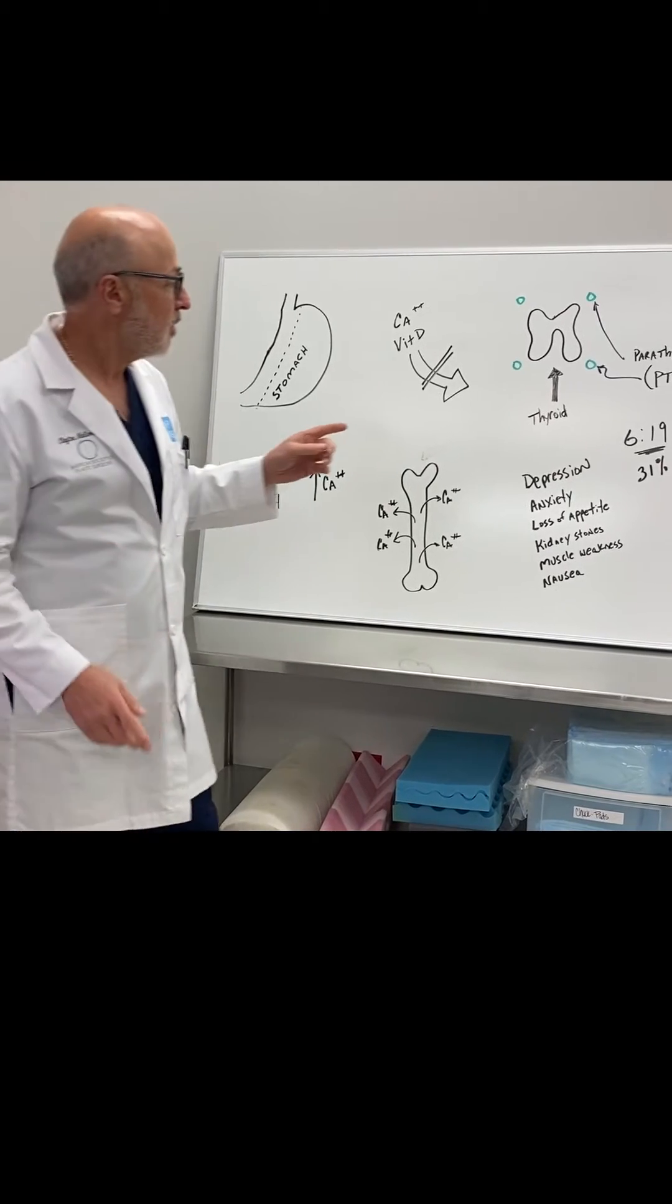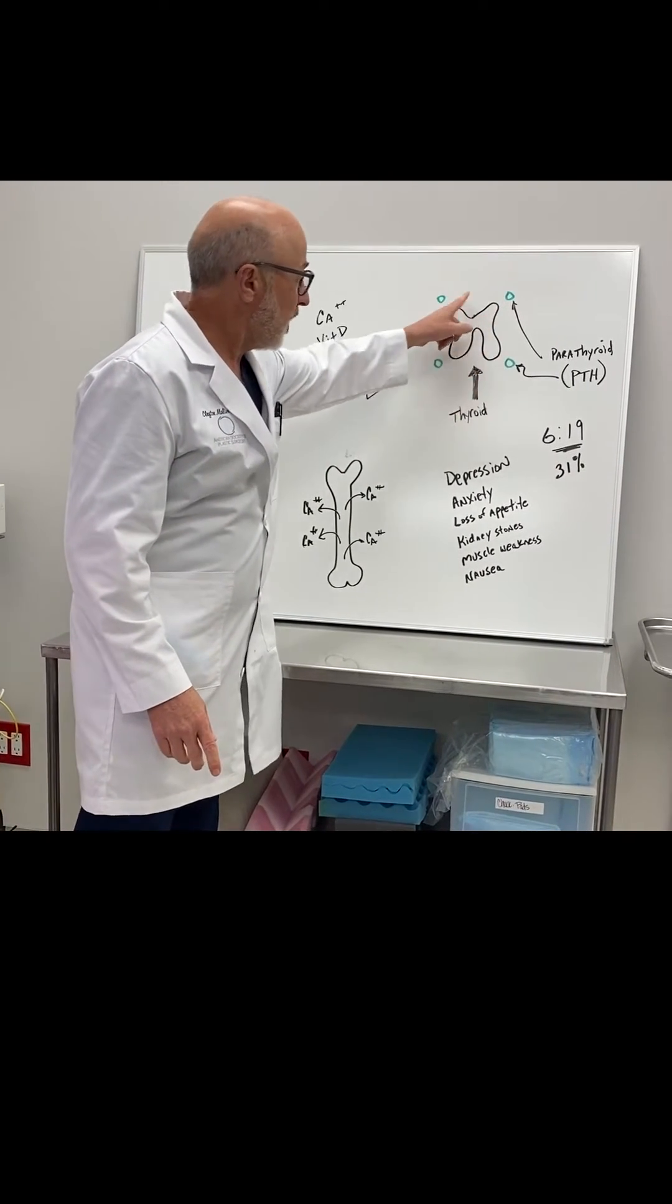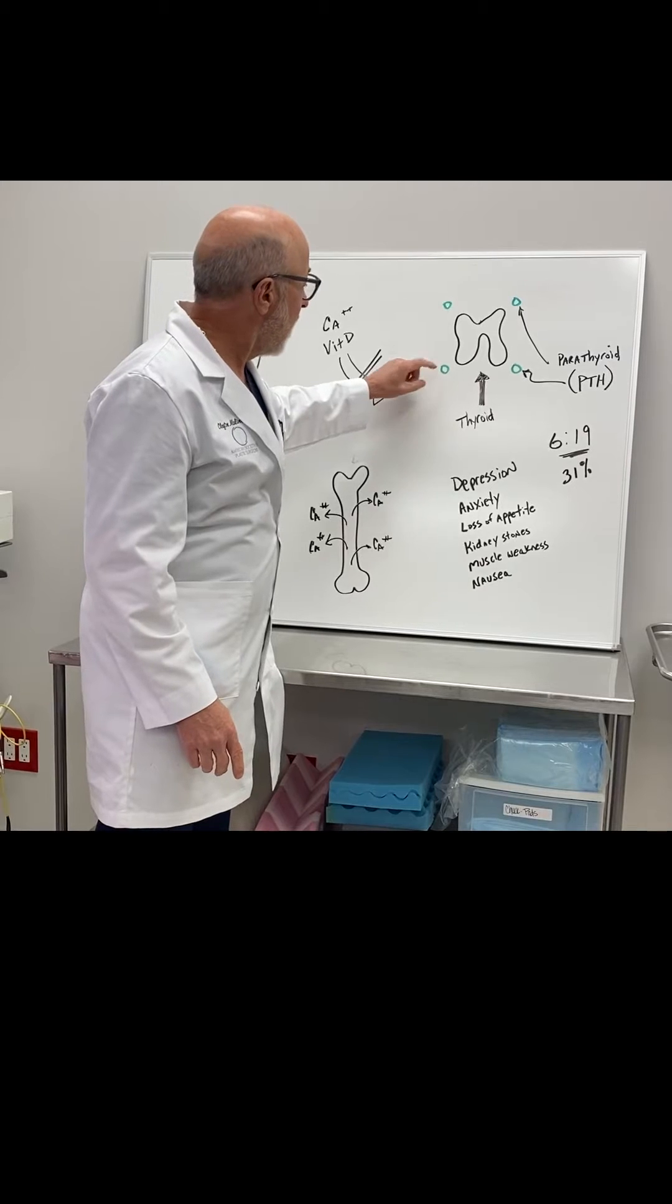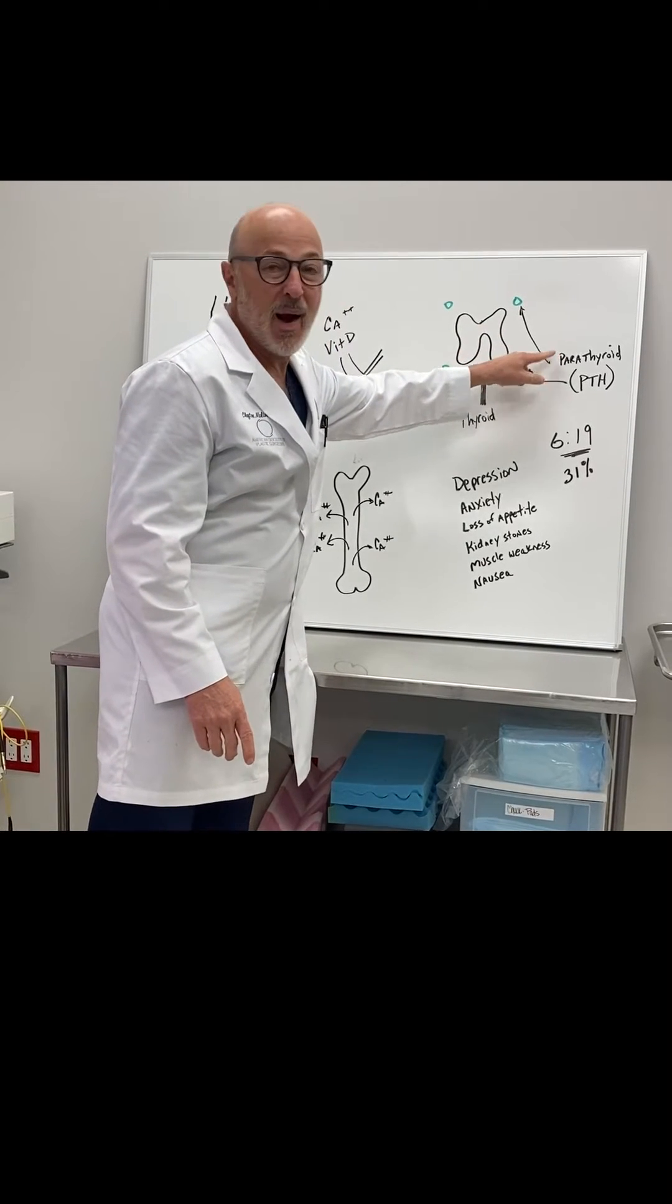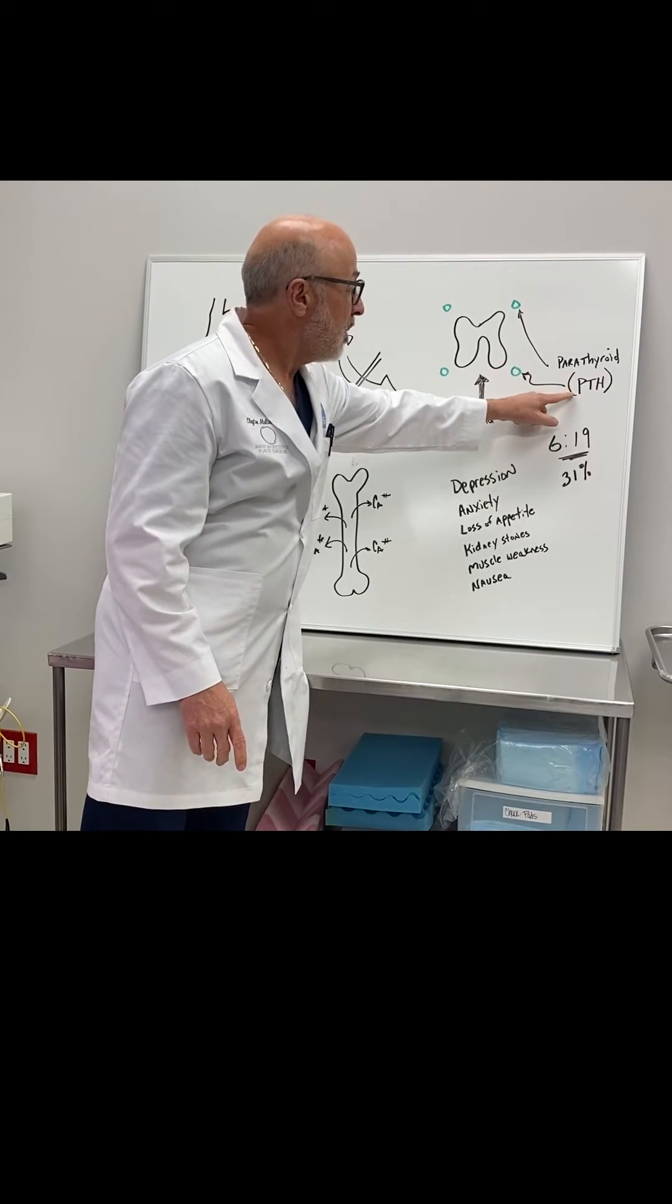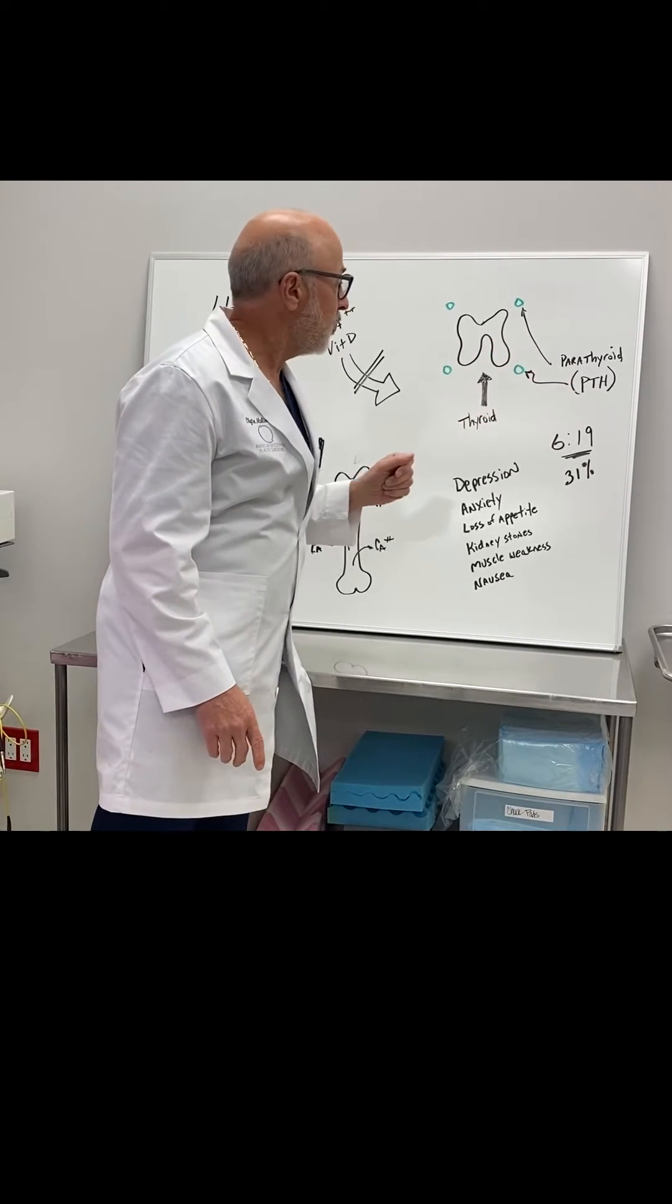And here's what happens. Everybody knows about the thyroid gland, but what most people don't know is that around the thyroid gland are four little glands called the parathyroid gland or PTH hormone. That's what they emit.